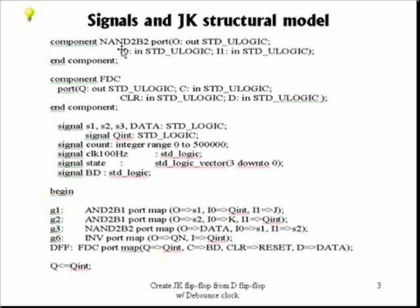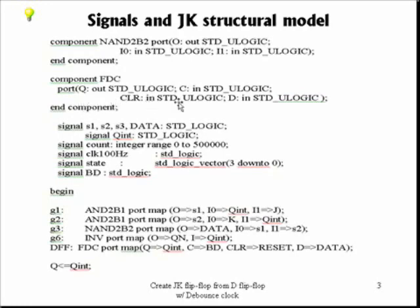The other component we're going to use is a NAND gate with two inputs where both inputs are inverted. The output O is standard U logic, I0 is the input standard U logic, and I1 is the input as well. From our derivation, those are what we need. We also need a data flip-flop, which Xilinx calls FDC — meaning data flip-flop with clear input. The port has Q as the output, followed by the clock designated by C, followed by the clear input designated by CLR.